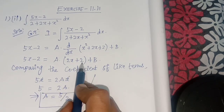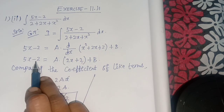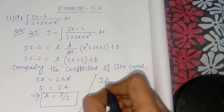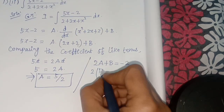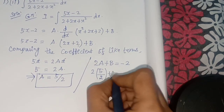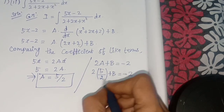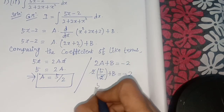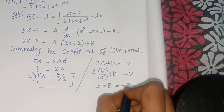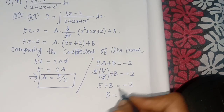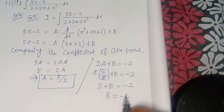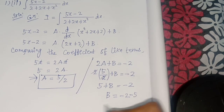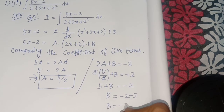Next, comparing constant terms: 2a plus b equals minus 2. Substituting a equals 5 by 2: 2 into 5 by 2 plus b equals minus 2. The 2 cancels, giving 5 plus b equals minus 2, so b equals minus 2 minus 5, therefore b equals minus 7.